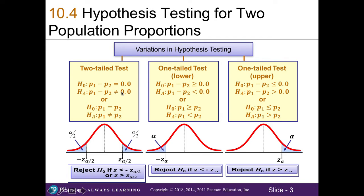As a refresher, here in our hypothesis statements, it's saying that the difference between our two population proportions are equal to zero or not equal to zero. Or in our second version, our population proportion of group one is equal to our population proportion of group two, or they're not equal to each other. In that case, we have a two-tailed test with two rejection regions possible.